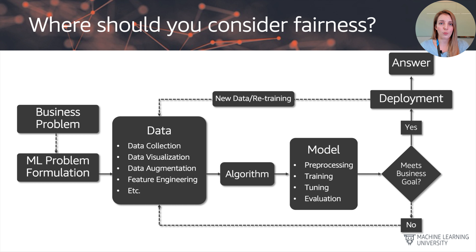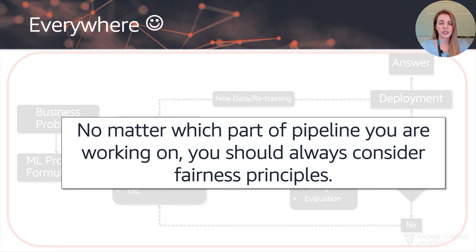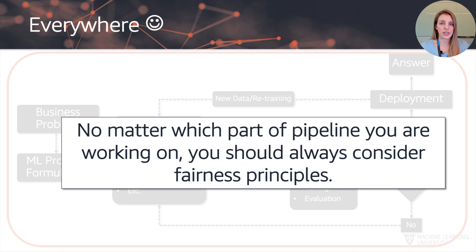The question is: where in this lifecycle should we consider fairness principles? The answer is very simple — we should consider fairness principles everywhere. No matter which part of the pipeline we're working on, whether it's the problem formulation, the model build, or the deployment, there is always something we can do to mitigate bias, check for bias, and implement best practices on responsible AI.